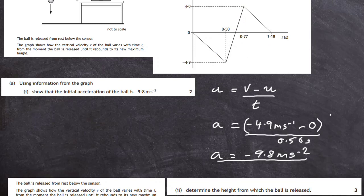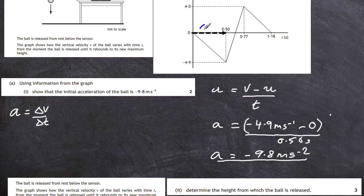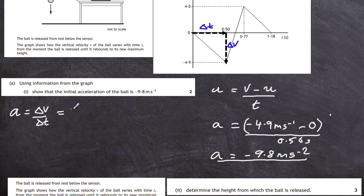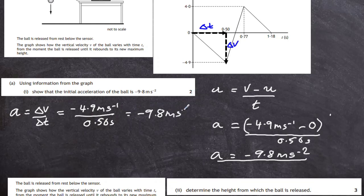The other possible way is the gradient method. The gradient of a velocity-time graph equals the acceleration, so acceleration = Δv / Δt. From the graph, Δt is 0.5 seconds and Δv is minus 4.9 m/s. The slope is negative, which corresponds to acceleration acting downwards. Dividing minus 4.9 by 0.5 gives exactly the same answer: minus 9.8 m/s².